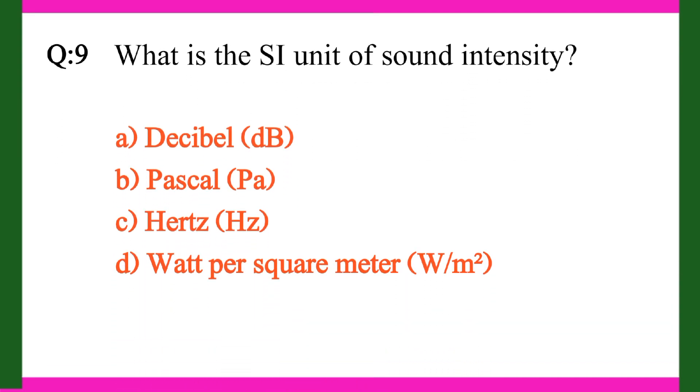Question 9. What is the SI unit of sound intensity? A. Decibel (dB). B. Pascal (Pa). C. Hertz (Hz). D. Watt per square meter (W per square meter). Right answer is D. Watt per square meter.